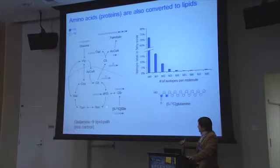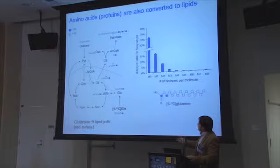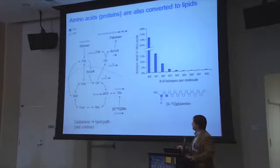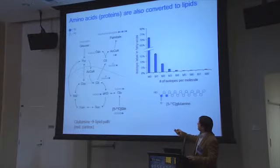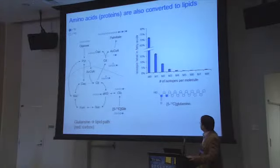We also do this with amino acids. Some of our previously published work using glutamine tracers has demonstrated that this reductive pathway — operating in the reverse direction of the normal Krebs cycle or TCA cycle — does account for some contribution to fatty acid synthesis. So not only are carbohydrates used for lipid synthesis, but glutamine is as well.